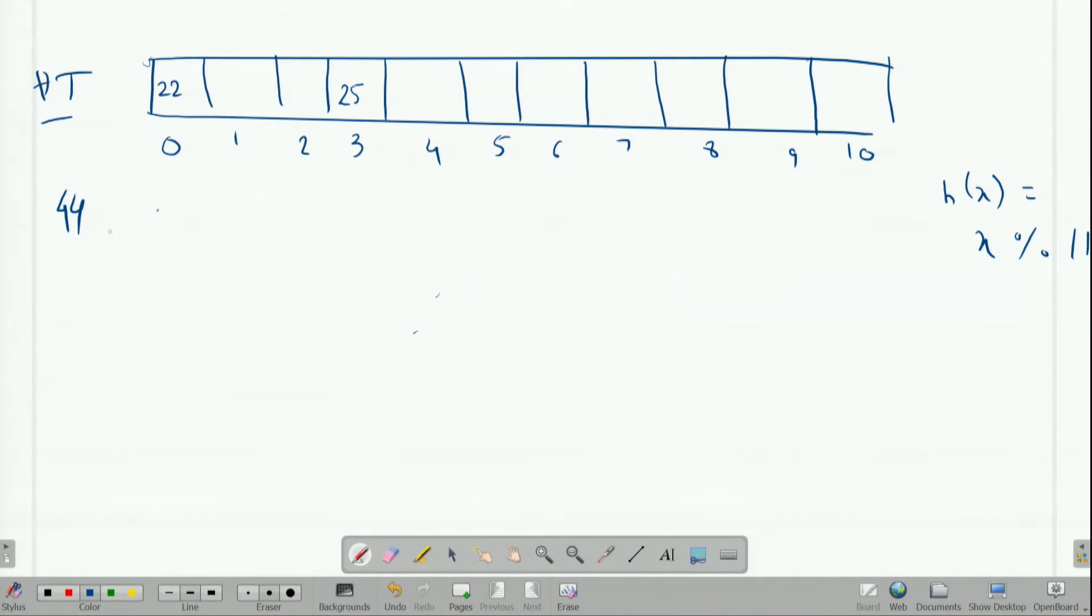Now if I take 44 and if I take modulus 11, then it will be 0. Now if I see key 0 element in my hash table, then it already has one element 22, so I cannot add it there. So what I do is in linear probing, we go to the next element. So if i was my initial position, then I will go to i plus 1, which is 1. So in this case, 1 is empty, so I can place my new element 44 here.